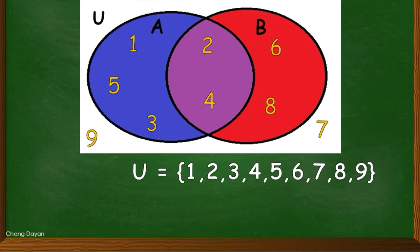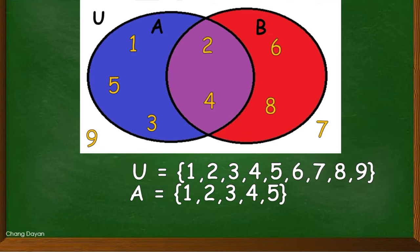What about our set A? Correct! Those elements are 1, 2, 3, 4, 5. And in our set B we have? Yes, you are right! We have 2, 4, 6, 8.